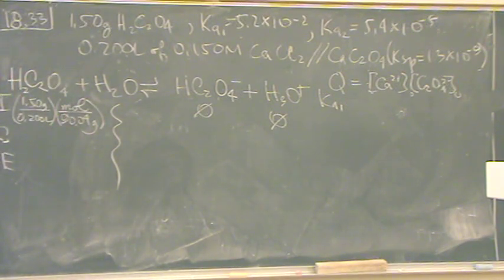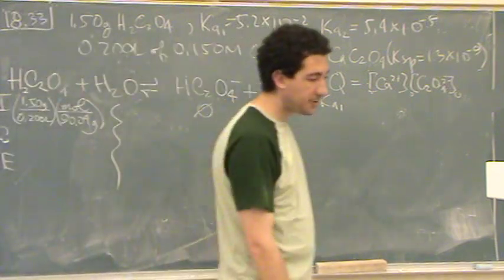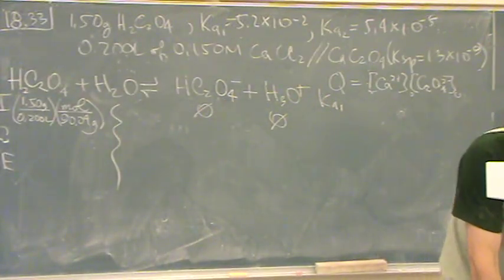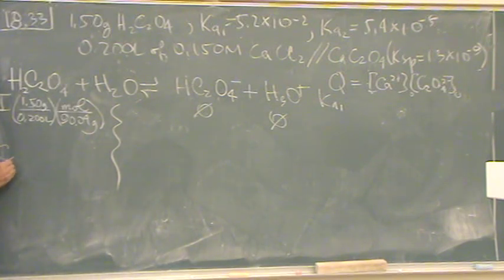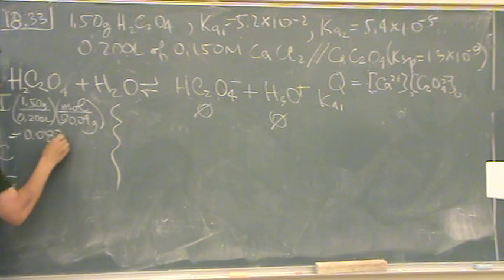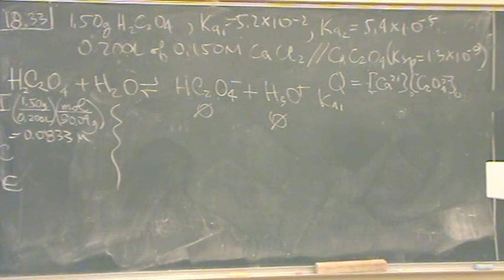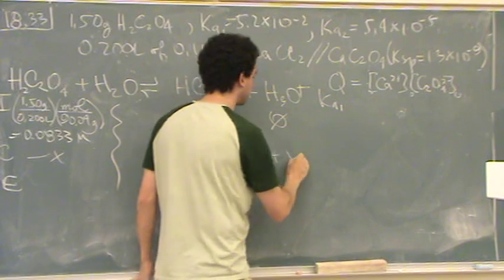Okay, so there's the concentration. I got rid of the grams and have moles per liter. That turns out to be 0.0833 molar. Okay, now I can do my ICE table, so minus x, plus x, plus x. So it's 0.0833 minus x, x and x.